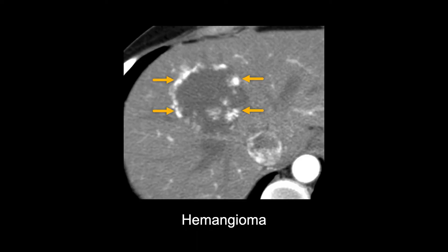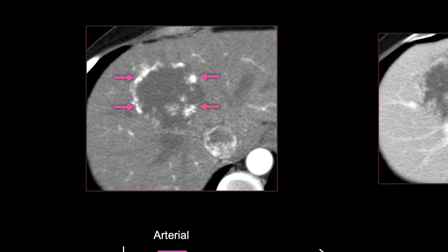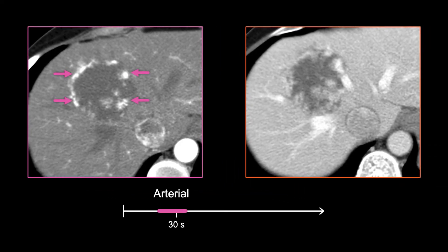The second is a hemangioma, which in contrast to a cyst has internal enhancement that will fill in over time. These are benign and relatively common in the liver. For hemangiomas in the arterial phase, the enhancement starts as small nodular areas along the outside of the mass, which grow and fill in toward the middle in the portal venous phase. Seeing this progression helps confirm the diagnosis.